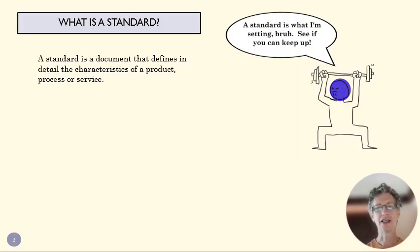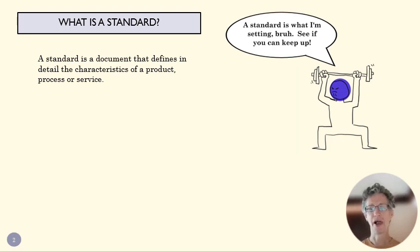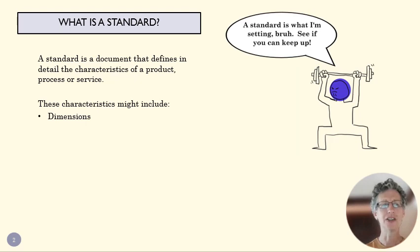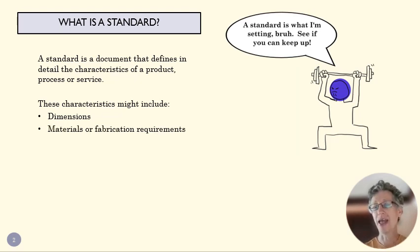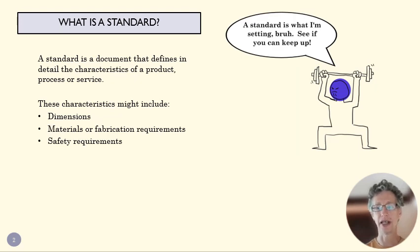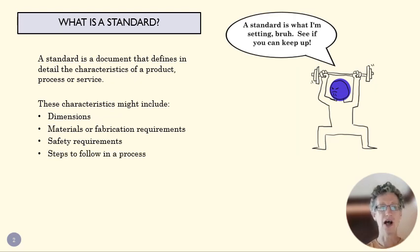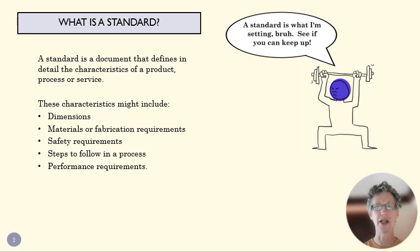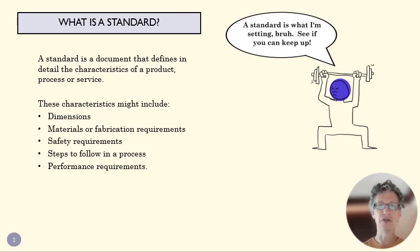A standard is a document — something written that defines the characteristics of a product, process, or service. It tells us what some product might look like: its shapes, how to make it, what it's made of, performance characteristics like safety, how well it stands up to being smashed or heated up. It might also tell us how to do something — the steps to follow in a process — and ultimately performance requirements, like how fast a car is supposed to go or how many cycles a food processor is supposed to last.